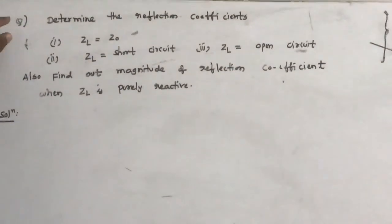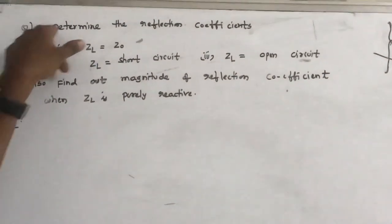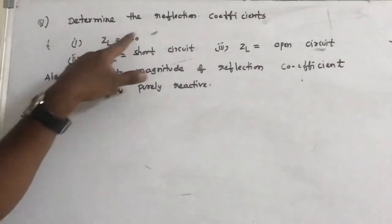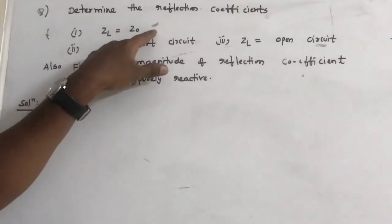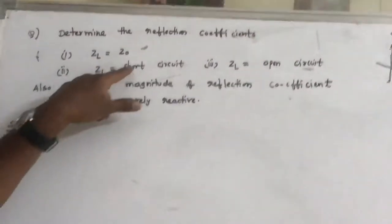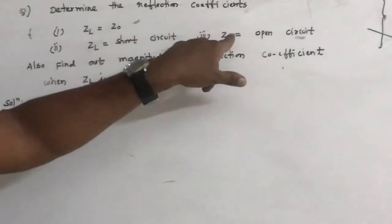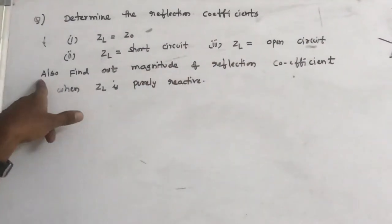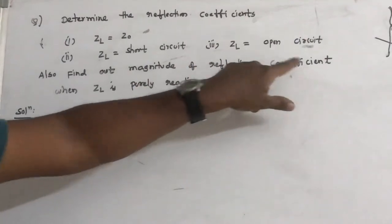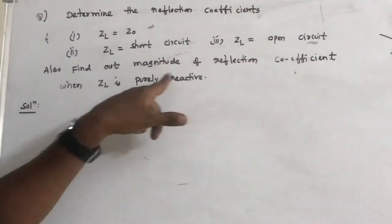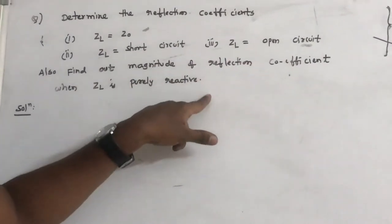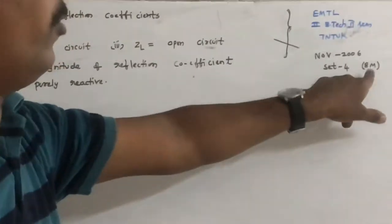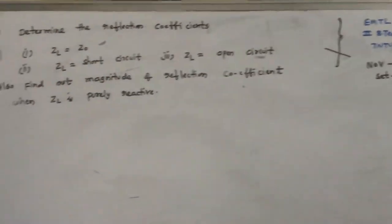This is the question: determine the reflection coefficients. Number 1, if load ZL is equal to Z0, the characteristic impedance. Number 2, if ZL, the load, is short circuited. Number 3, if the load is open circuited. And also find out the magnitude of reflection coefficient if ZL is purely reactive. This is a very important question from November 2016, Set 4, for 8 marks.